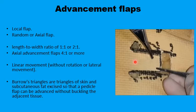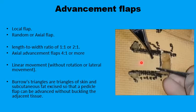If the flap is axial and has cutaneous arteries going through the flap itself, this ratio can extend from four to one length to breadth, or even more, because you have these named cutaneous arteries going through the substance of the flap itself. The movement of the flap after planning and incising around it to fill up the defect should be in a linear movement without twisting or lateral movements.